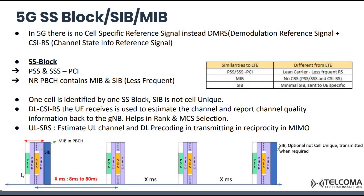In the SS block we have PSS and SSS, and in between we have PBCH shown in purple. What PBCH contains is MIB — master information block — which is specifically for PLMN ID and all those recognitions required for the radio network, RNTI and all those which are required, similar to what we have in LTE.